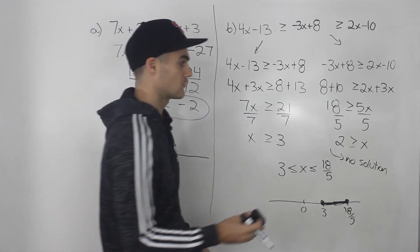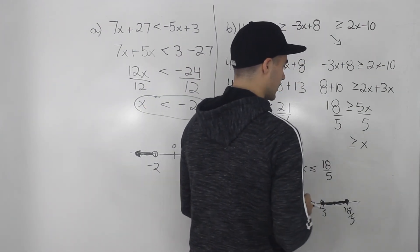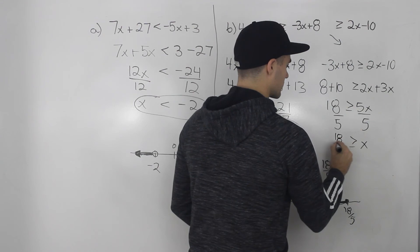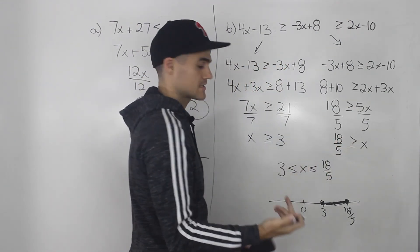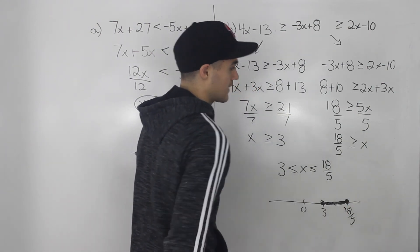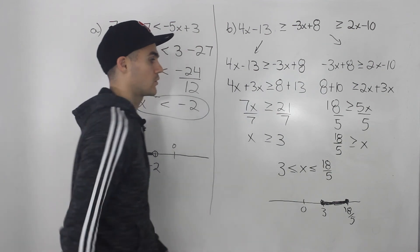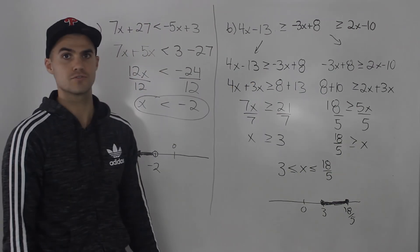But since we got 18 over 5, then it is a possible solution. x has to be greater than or equal to 3, but less than or equal to 3.6. So there is a portion of the x values that will make this double inequality work, but also be on the lookout for double inequalities that have no solutions.